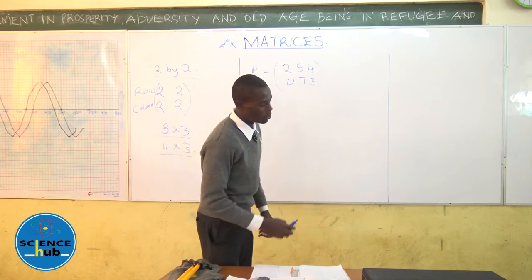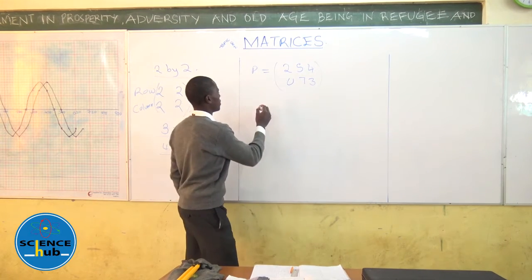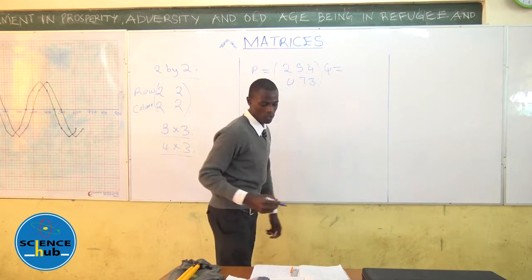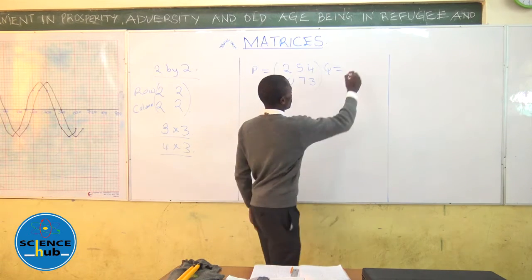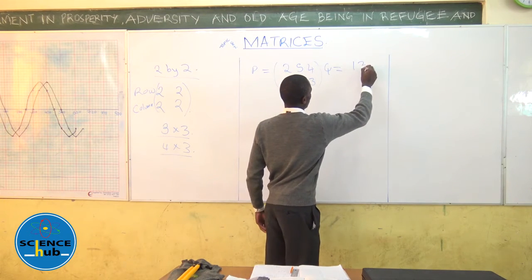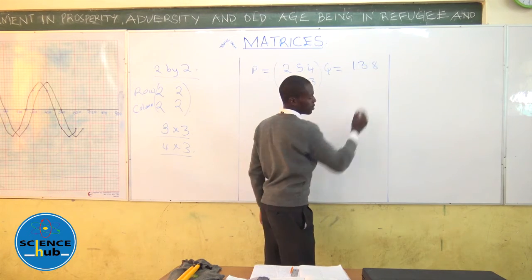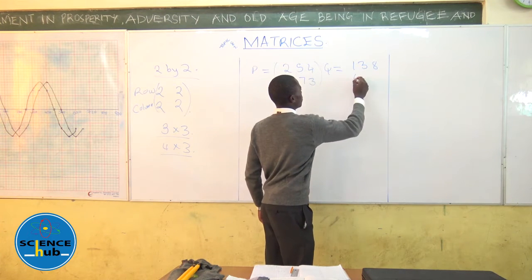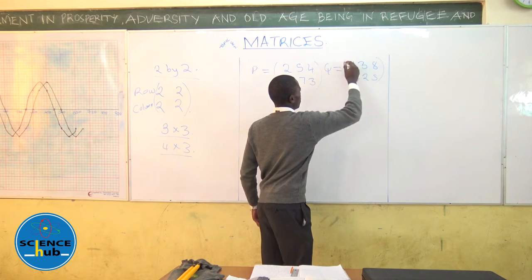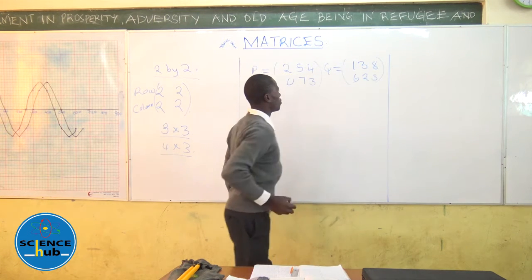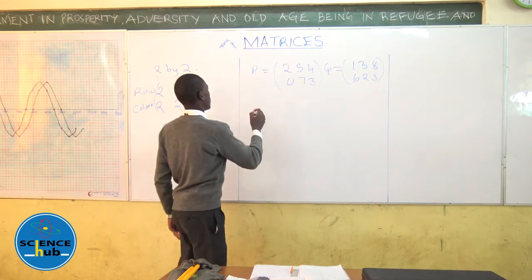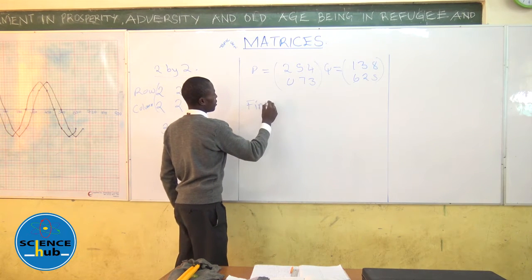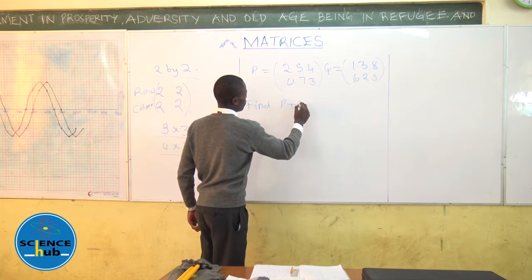And another matrix, matrix Q, given that Q is equal to 1, 3, 8, 6, 2, 5. You are told to find P plus Q.